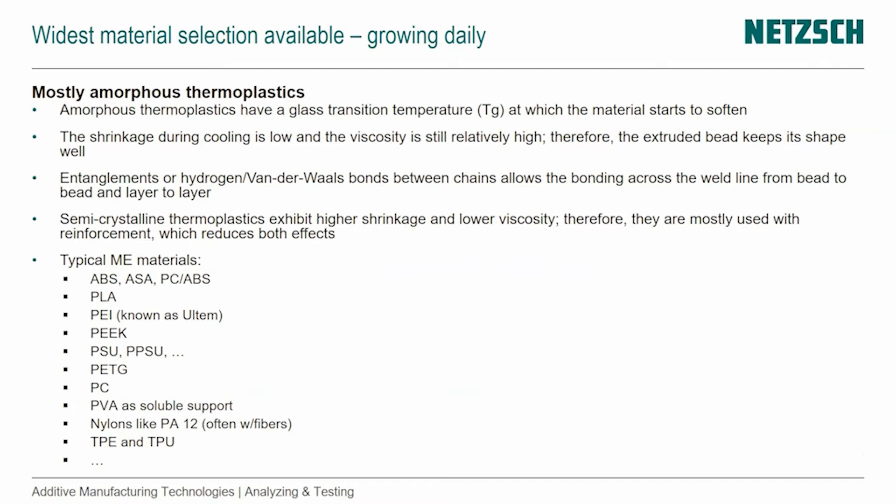Typical materials that are used are ABS — that's the most common — as well as PLA, but there are variations of ABS: ASA and PC-ABS. Then high-performance materials would be PEI, known as ULTEM, PEEK, PSU, and PPSU. New materials that are coming in are PETG and polycarbonate.